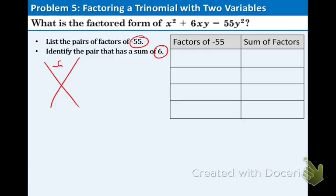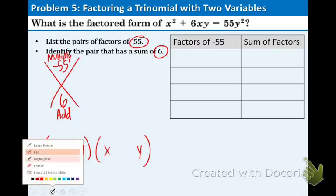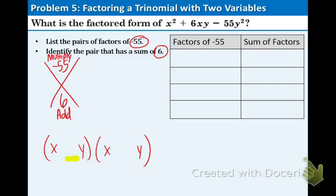Take the negative 55 and put it up top. And we're multiplying two numbers to get negative 55. And take the 6 and we're going to add those two numbers to get 6. So basically what's going to happen is we're having an x and a y in both spots. What we want to do is figure out which numbers go in these spots right here. That's all we're doing by using the X method.